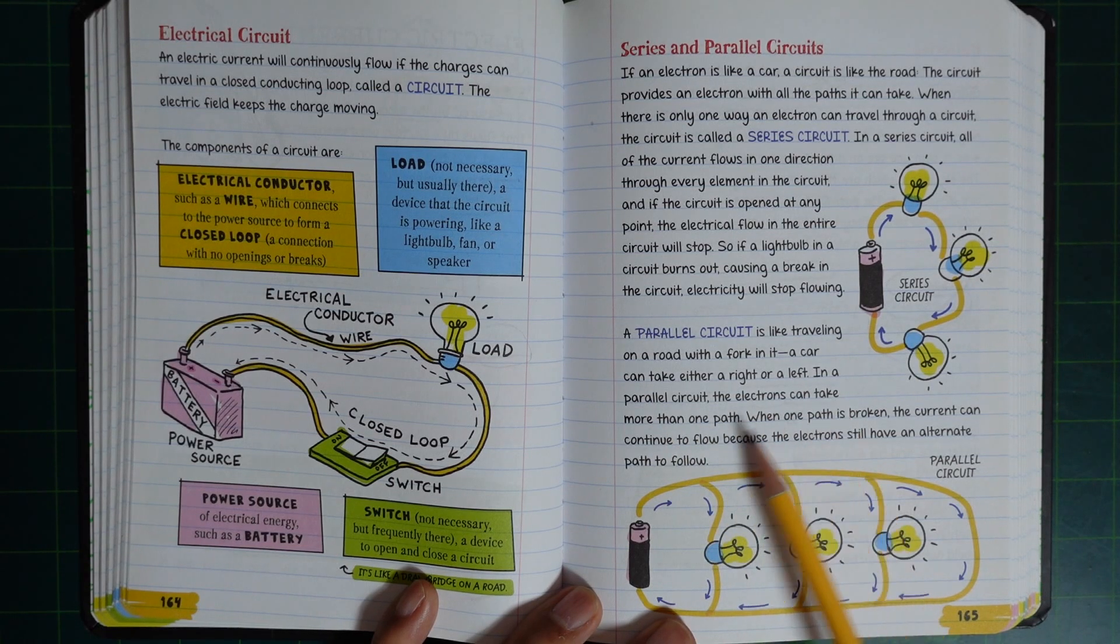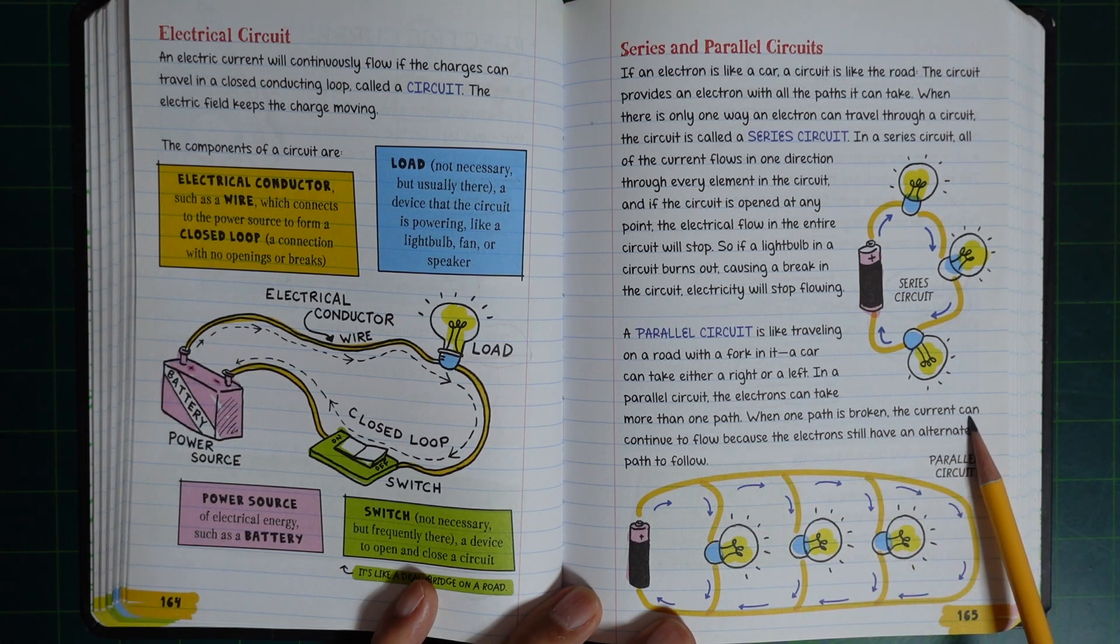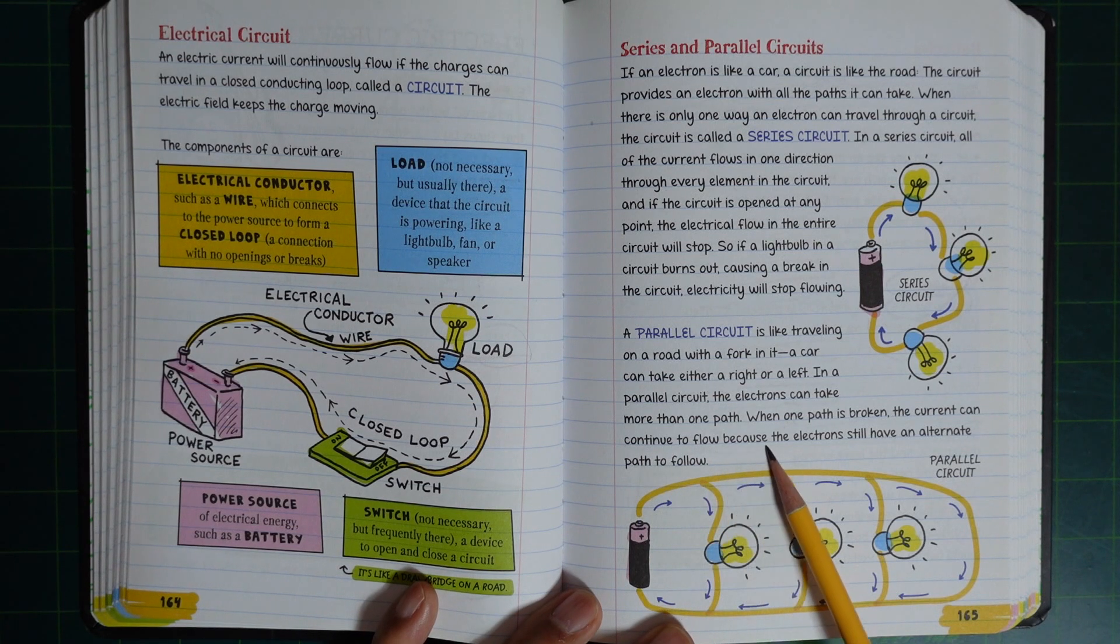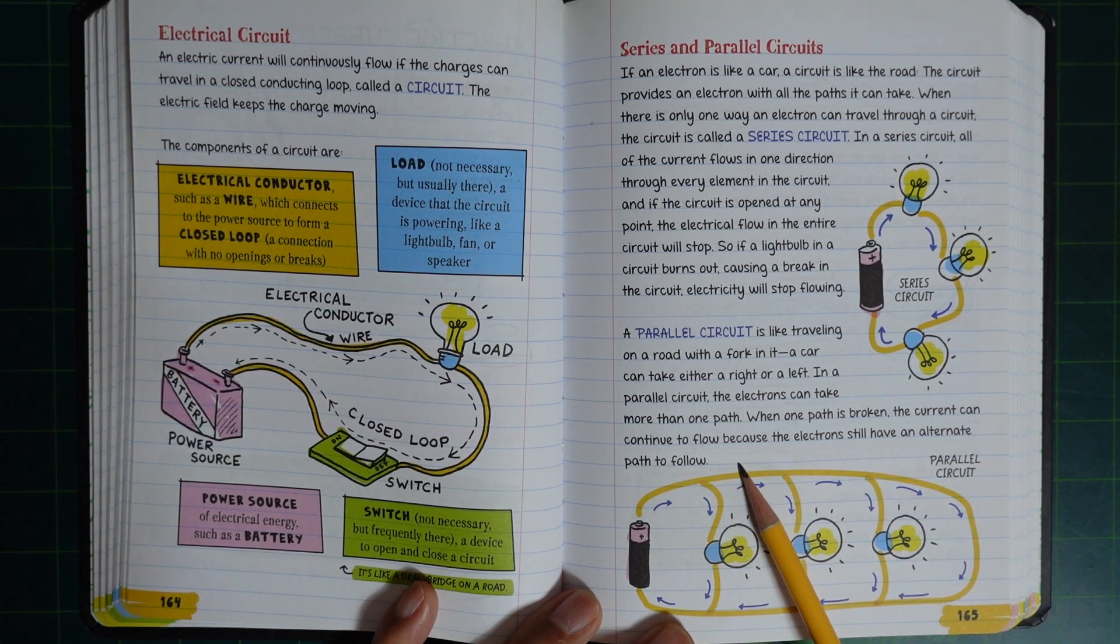In a parallel circuit, electrons can take more than one path. If one path is broken, the current can continue to flow because the electrons will have an alternative path to flow through.